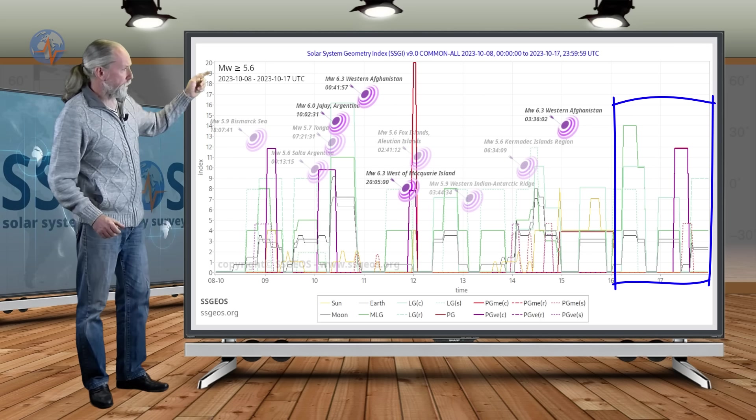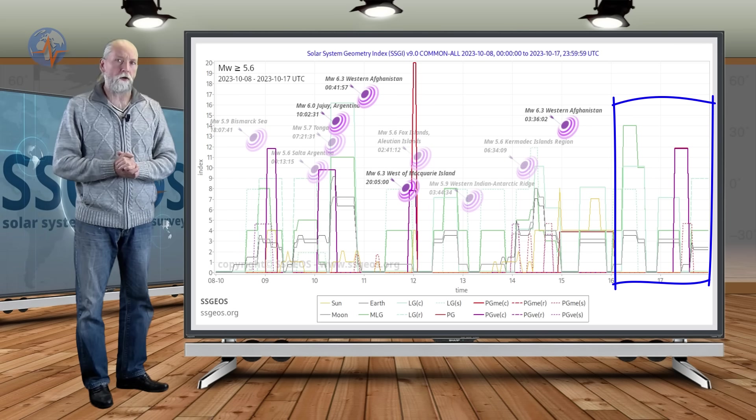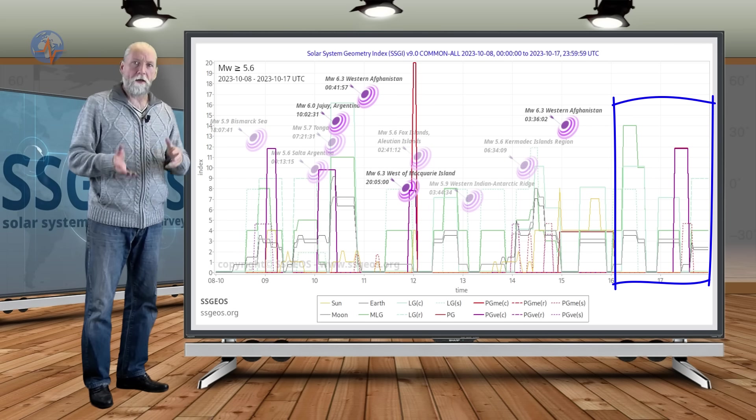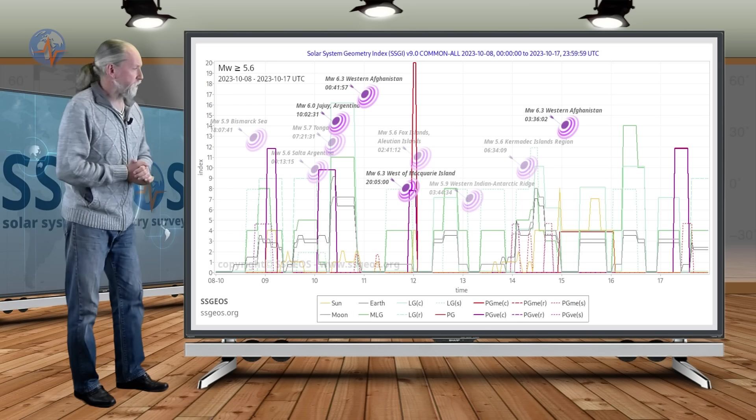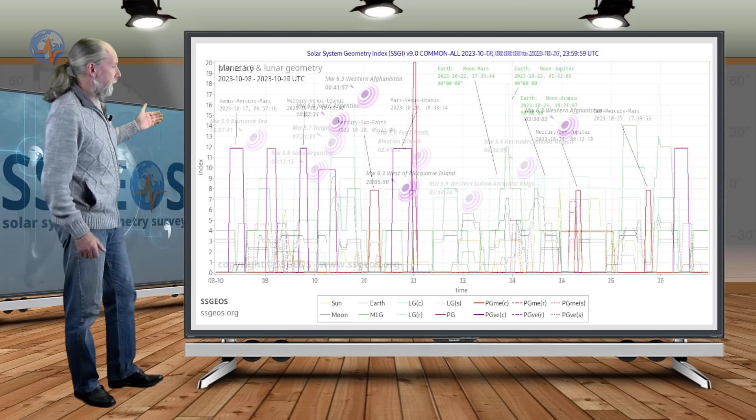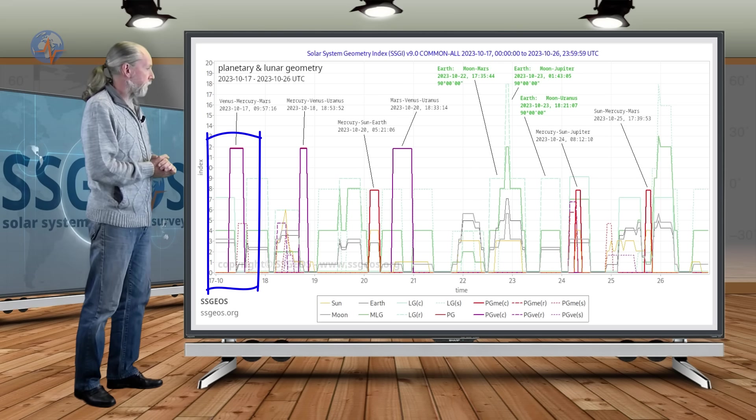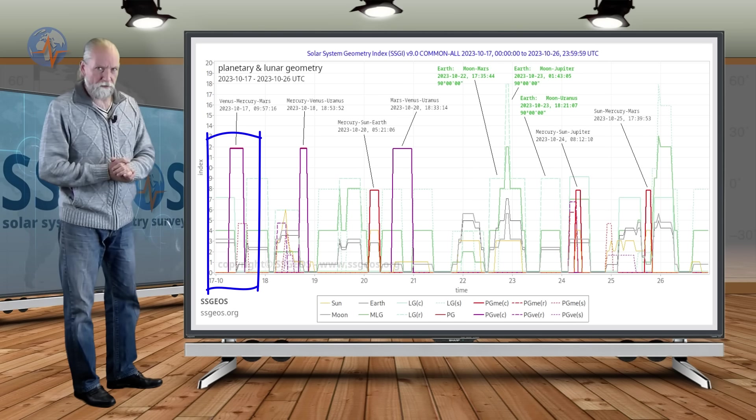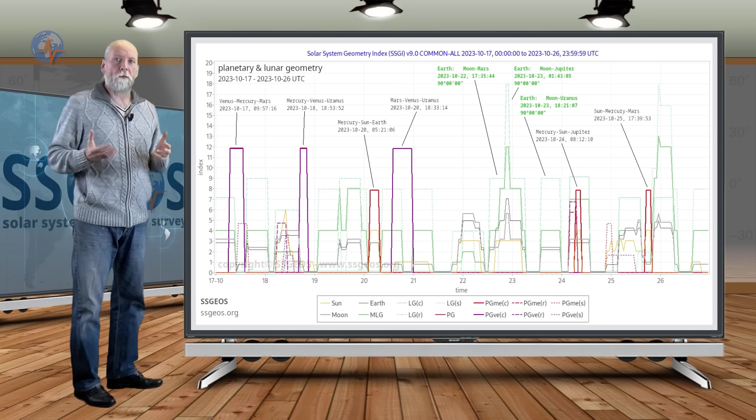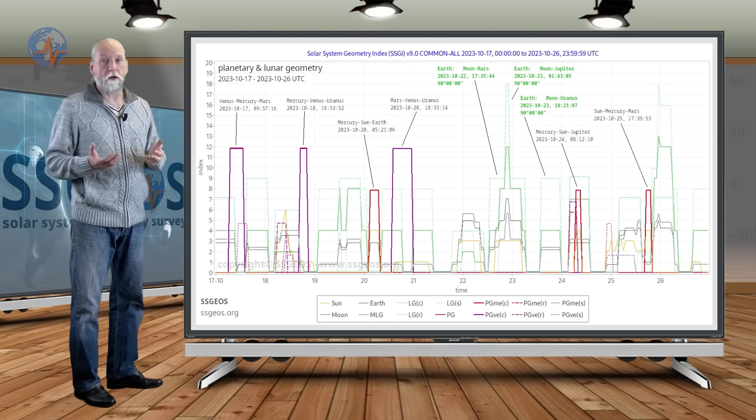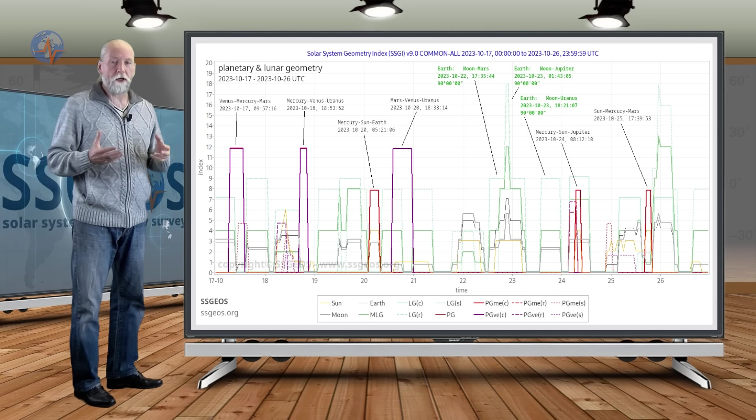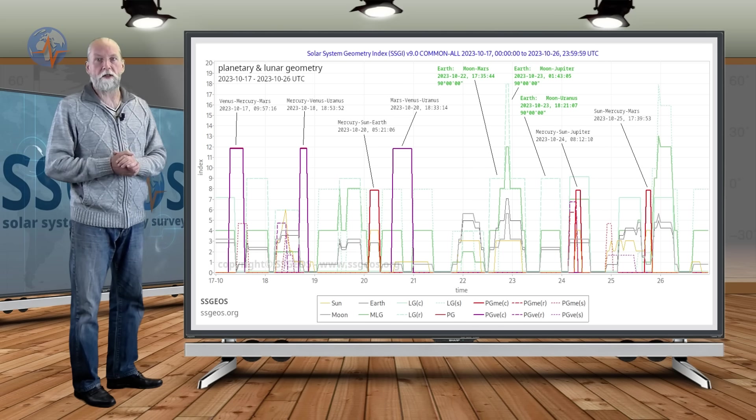And as you can see here today also on the 17th, this is the next planetary conjunction and we go into the next time frame on the SEGI graph for the coming week. We see this planetary conjunction, which is actually Venus, Mercury, and Mars, and that occurred this morning. We know that with planetary conjunctions involving Mercury in particular, we can have or usually have an increase in seismic activity.